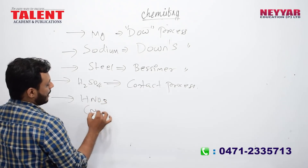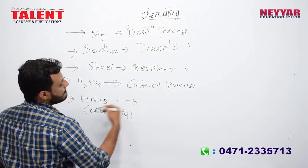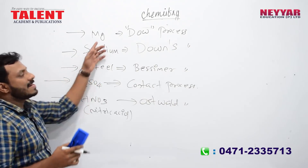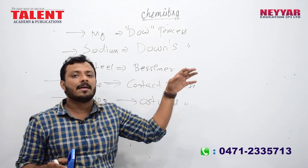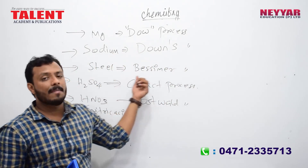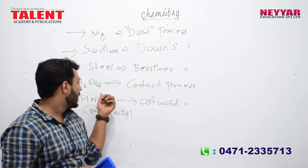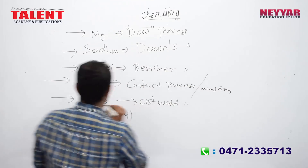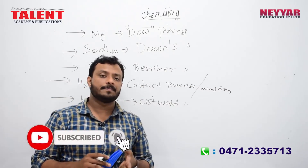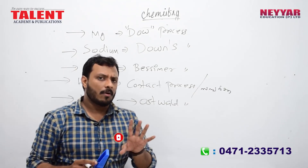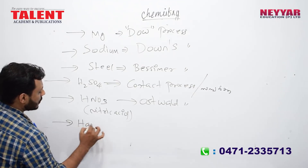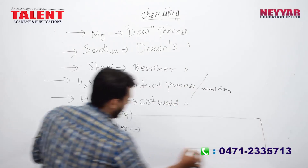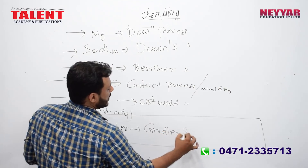HNO₃ — nitric acid — is made by the Ostwald process. Steel is made by the Bessemer process. The Girbotol sulfide process is also relevant here.